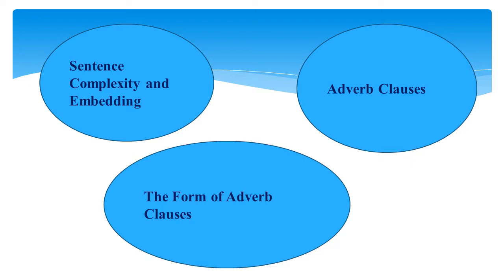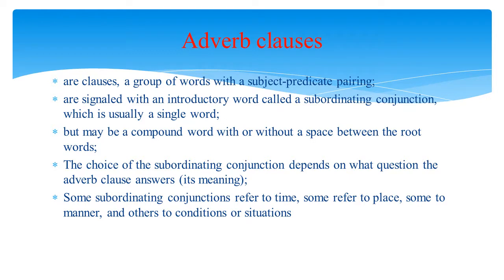When placed at the beginning or in the middle, adverb clauses require a comma to offset them from the rest of the sentence. For example: 'Whether you like it or not, you have to go.' 'The boy, although very bright...' However, when an adverb clause is at the end of a sentence, no comma is needed. Adverb clauses are clauses — a group of words with a subject-predicate pairing. They are signaled with an introductory word called a subordinating conjunction, which is usually a single word but may be a compound word. Some subordinating conjunctions refer to time, some to place, some to manner, and others to situations or conditions.